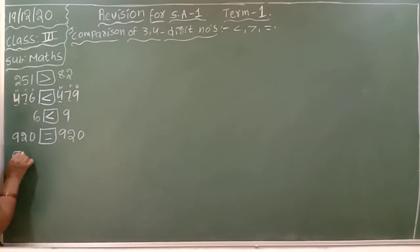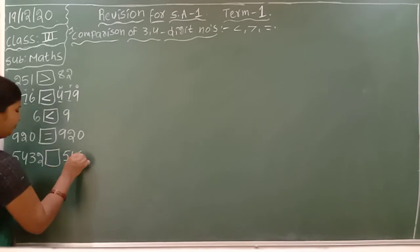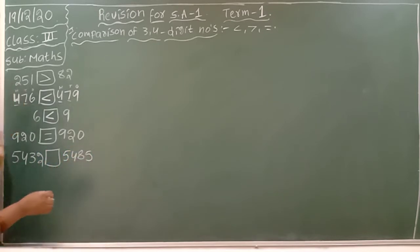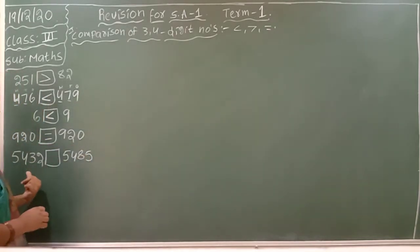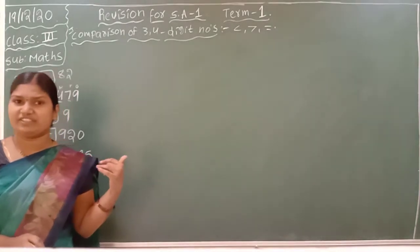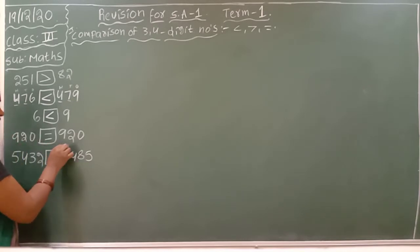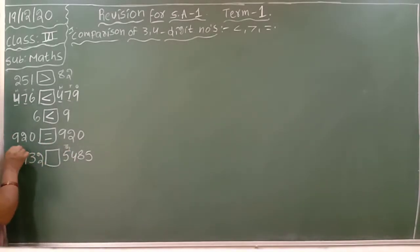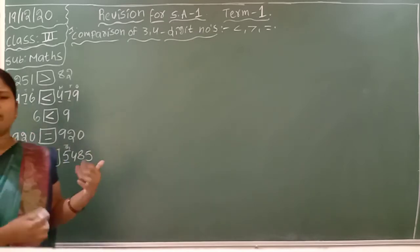One more — that is a 4-digit number: 5,4,3,2 and 5,4,8,5. It is a 4-digit number and it is also a 4-digit number. First you have to check the highest place value, that is 1s, 10s, 100s, 1000s. Compare the 1000s place value: 5 and 5 — same.